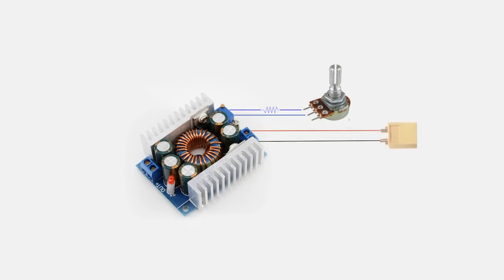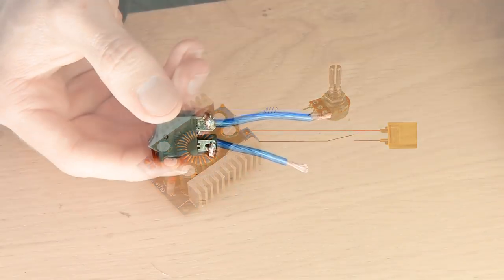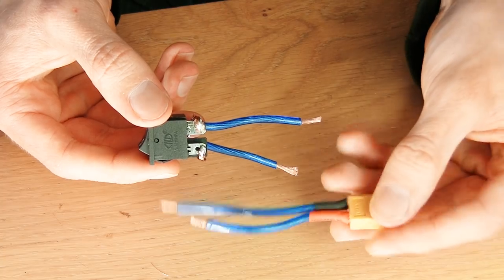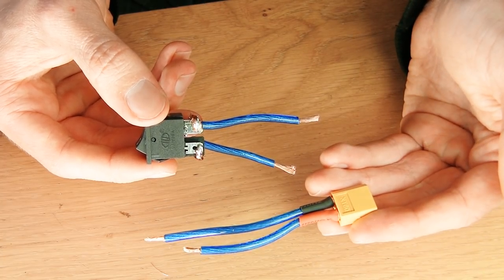Now solder on a female XT60 connector and a switch to the regulator's input. Why an XT60 connector? Well, this type of connector is well suited for high current applications, and it is frequently used with LiPo batteries. Remember to use heat shrink over the solder joints to protect against power shorts.